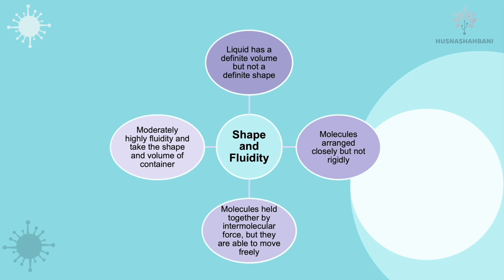Liquid has a definite volume but not a definite shape, so it depends on the shape of the container. Molecules are arranged closely but not rigidly. Molecules of liquid are held together by intermolecular forces but they are able to move freely, and liquid has moderate to high fluidity and takes the shape and volume of the container.